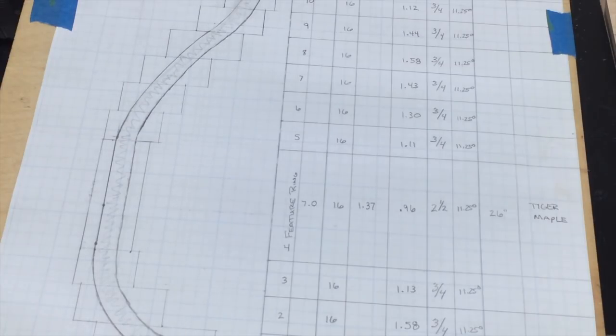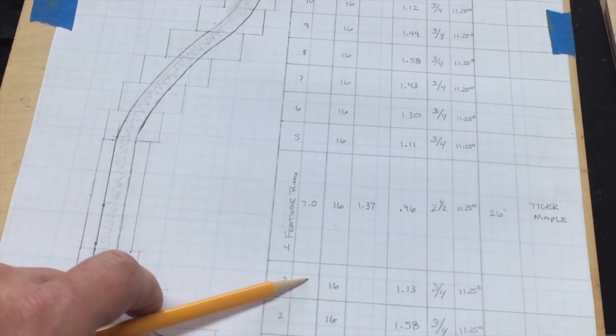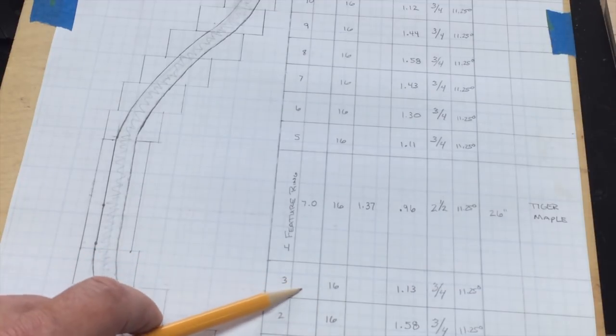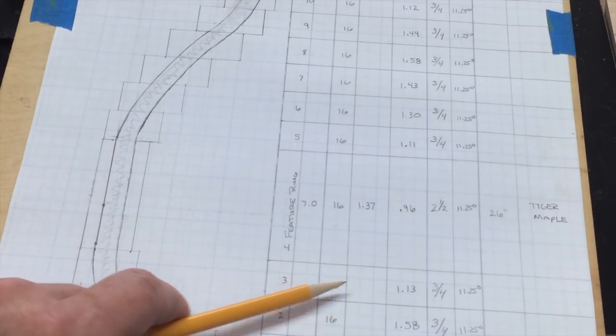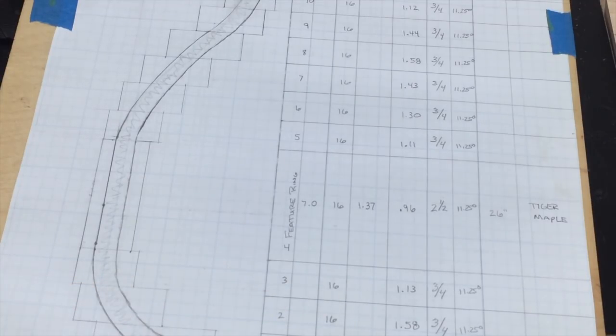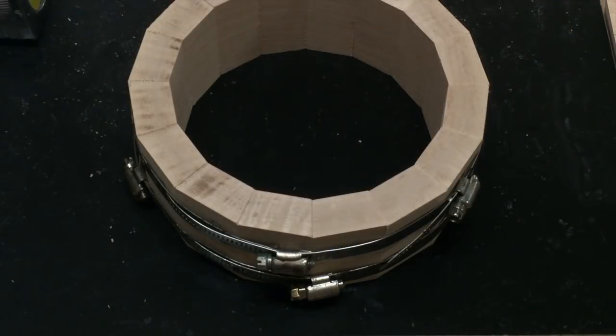Once I have that one done, I can go ahead and calculate all the rest of these. What I do is measure out the outside edge and fill it in for the diameter. For the segment length, it's diameter times pi, which gives you the circumference, divided by the number of segments. That gives you the segment length for each piece. That worked out pretty well.